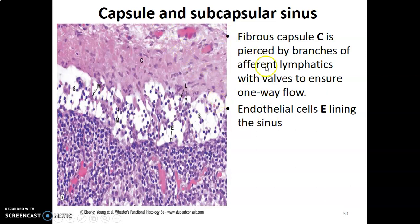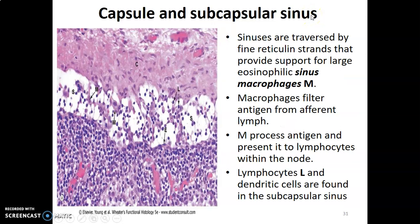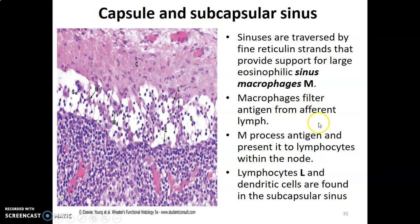The fibrous capsule is pierced on the convex side by afferent vessels and is lined by endothelial cells forming the subcapsular sinus — a sinus being an endothelial-lined channel. Within the sinuses there are reticulin strands and fibers that support the cells inside the lymph node. Macrophages are also present here, filtering antigens from the afferent lymph.